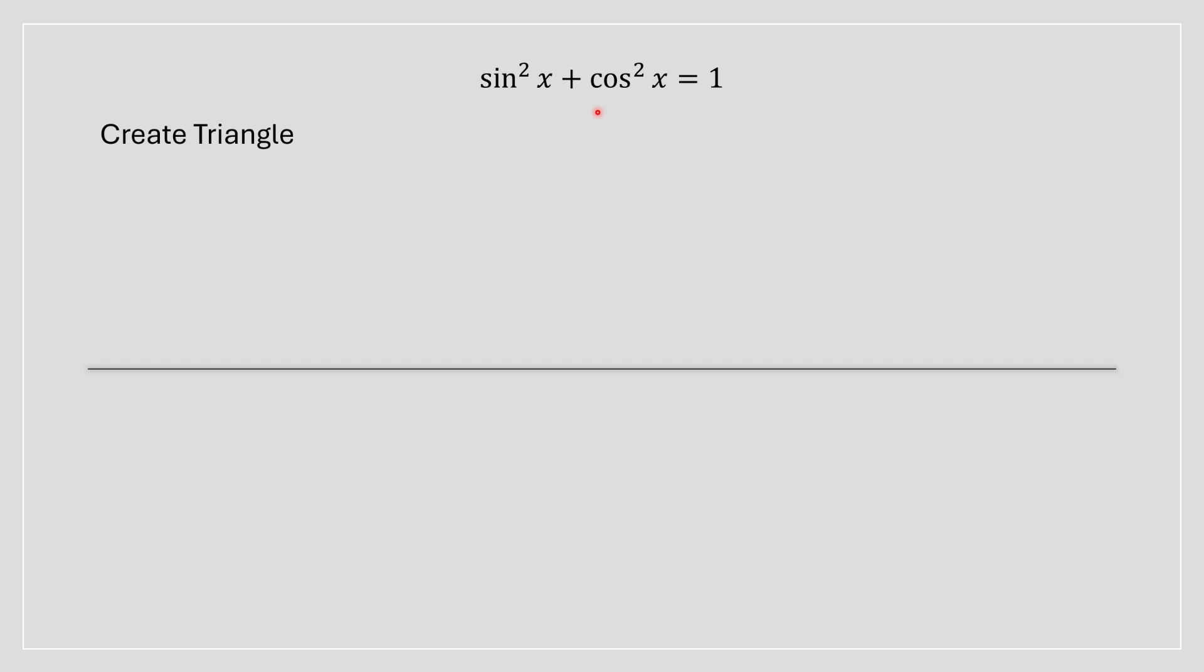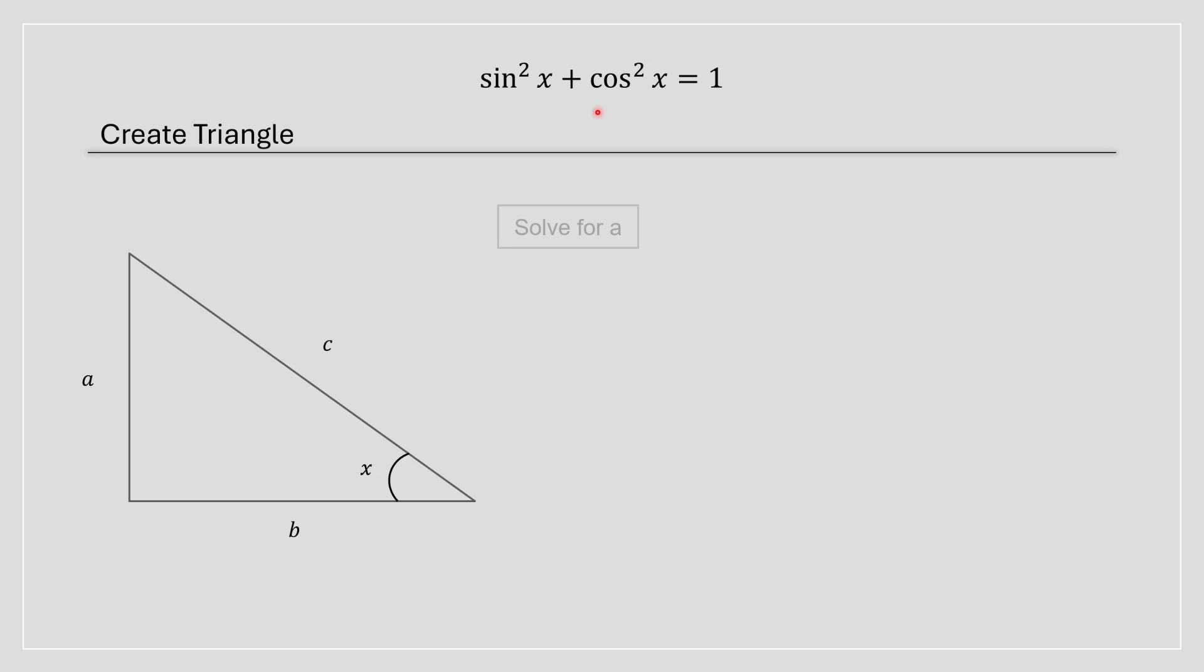So the first step is to create a right-angle triangle, very straightforward. We're going to label each side of this triangle and the angle. The reason for this is we're going to solve for each side of this triangle more precisely. We're going to solve for the a side and the b side.